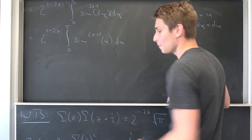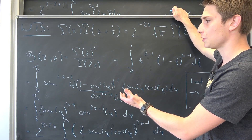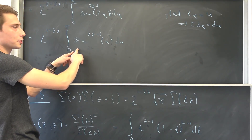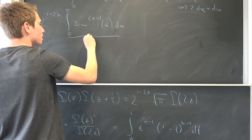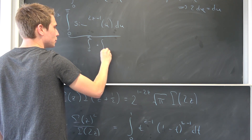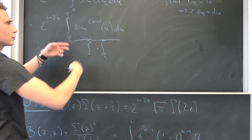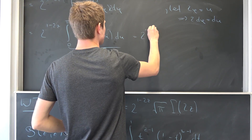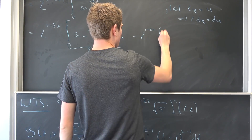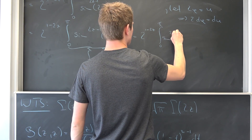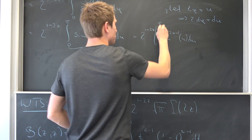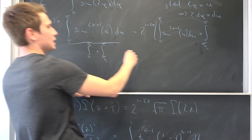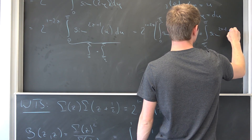Now, how can we continue? We would like to get back to the beta function, but the beta function requires pi over 2 as the upper bound. So let's break this integral up into an integral from 0 to pi over 2, plus an integral from pi over 2 to pi — 2 to the 1 minus 2z power times the integral from 0 to pi over 2 of sine to the 2z minus 1 of u du, plus the integral from pi over 2 to pi of the same integrand.